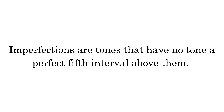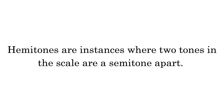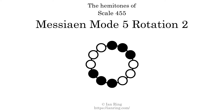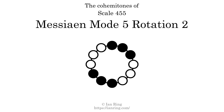Imperfections are tones that have no tone a perfect 5th interval above them. This scale has 2 imperfections. Hammertones are instances where 2 tones in the scale are a semitone apart. This scale has 4 hammertones. Co-hammertones are instances where 2 hemitones are beside each other. This scale has 2 co-hammertones.